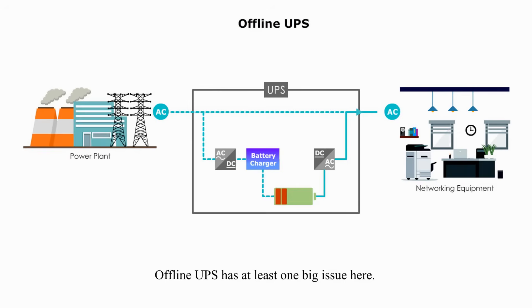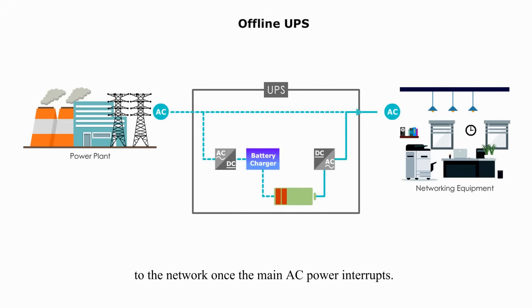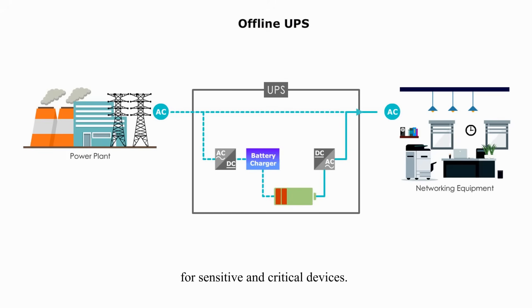Offline UPS has at least one big issue: it has a switching delay to supply power to the network once the main AC power is interrupted. Therefore, offline UPS is not recommended for sensitive and critical devices.